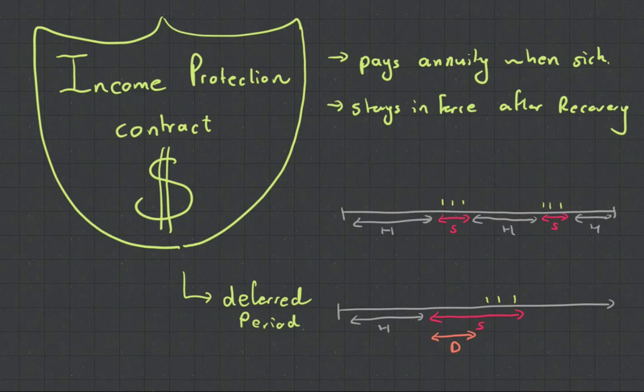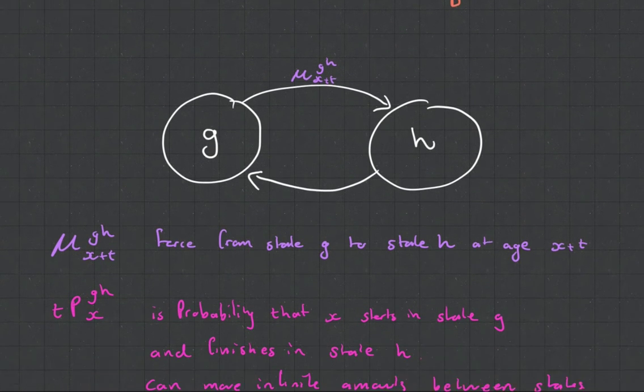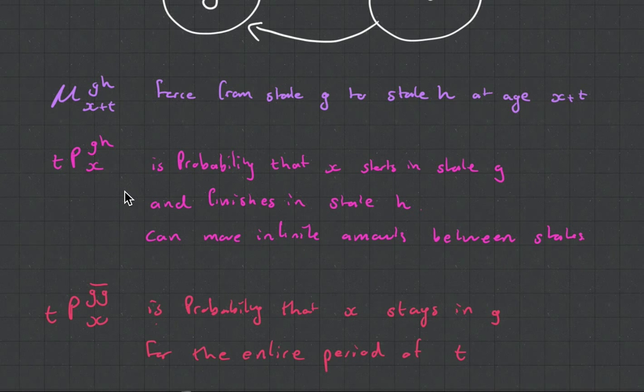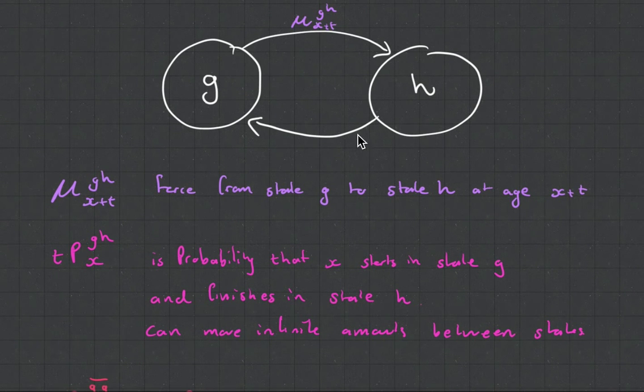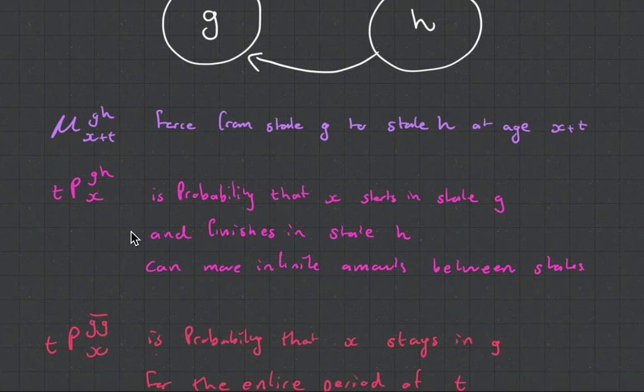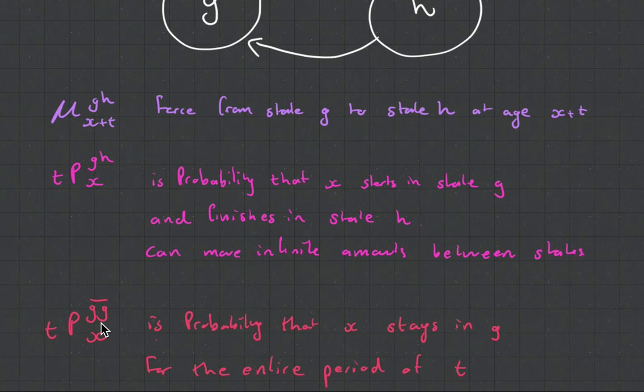Before we've just been dealing with death but now we've introduced these other ones and because we've introduced more states we have to upgrade our notation. So you'll see the notation now indicates from what state. So this is like a little model you'll use with your different states and those are your transitions. You'll have the starting state to your finishing up state and the age. If there's a bar across it means that you stay in that state and you don't jump around.